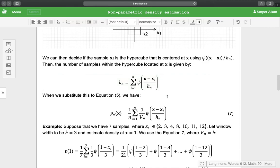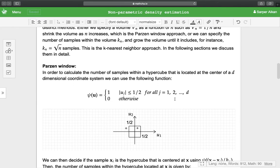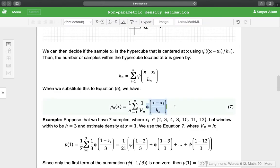So when we substitute this to equation 5, remember equation 5, which was this, we have a summation 1/n, summation 1/vn, and the decision whether the sample is in the hypercube or not.